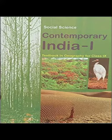The following major types of vegetation may be identified in our country: 1. Tropical Evergreen Forests, 2. Tropical Deciduous Forests, 3. Tropical Thorn Forests and Scrubs, 4. Montane Forests, and 5. Mangrove Forests. Tropical Evergreen Forests are restricted to heavy rainfall areas of the Western Ghats and the island groups of Lakshadweep, Andaman and Nicobar, upper parts of Assam and the Tamil Nadu coast.